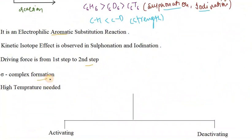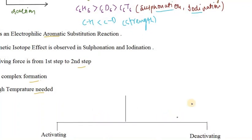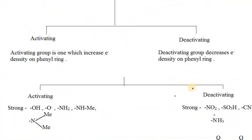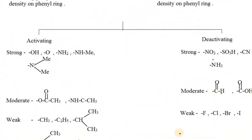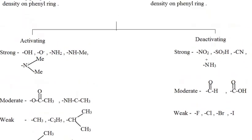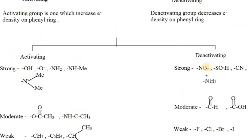The sigma complex is formed and we need higher temperature. Now if the benzene ring already has a substituent — a functional group — and we proceed with EAS, we need to consider how that group affects the reaction.